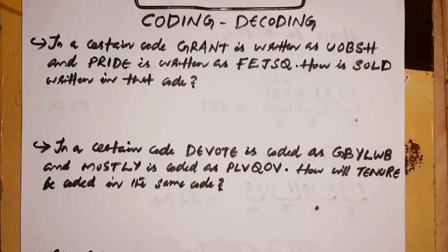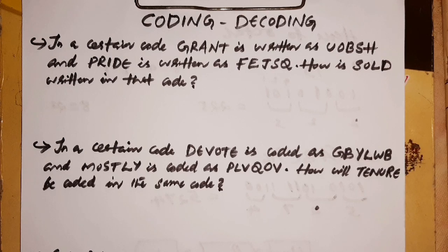We have the word GRANT and its code, and the word PRIDE and its code. We will now figure out how SOLD is written in that code.